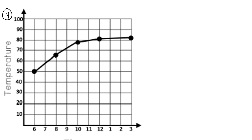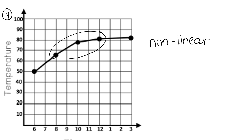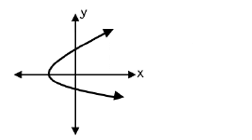For number four, this is not a perfectly straight line — you can tell that it starts to bend in the middle, and so it is a nonlinear graph. Number five is also a nonlinear graph because that is not a straight line. There is a curve in the graph, and so it is nonlinear.